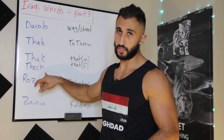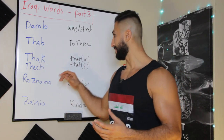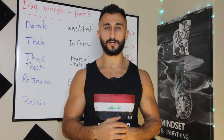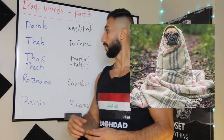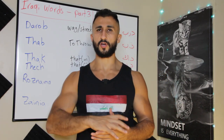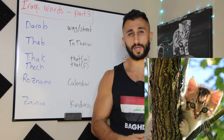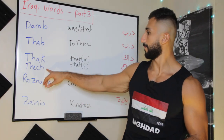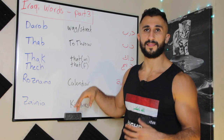The next words are 'thak' and 'thich.' Thak means 'that' for masculine, and thich for feminine. For example: 'thak il chalib helo' — that dog is cute. For feminine, 'thich il bazuna halwa' — that cat is pretty. The plural of thak is 'tholak,' and the plural of thich is 'then-ne.'